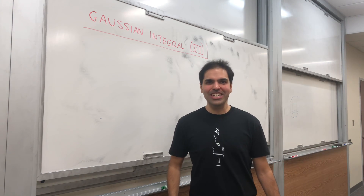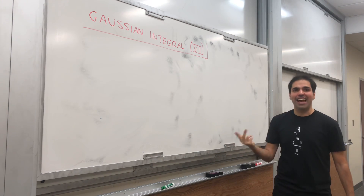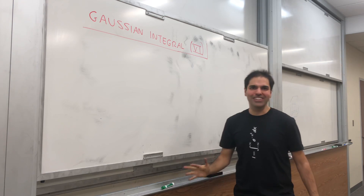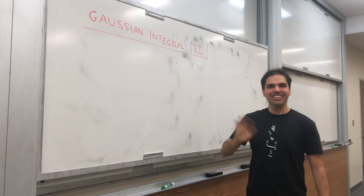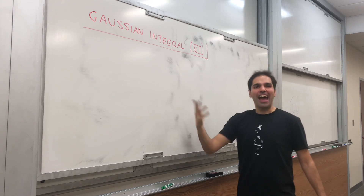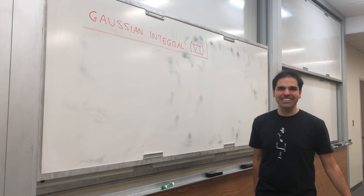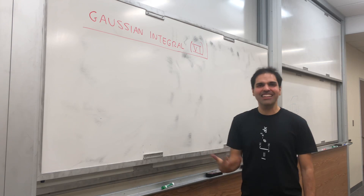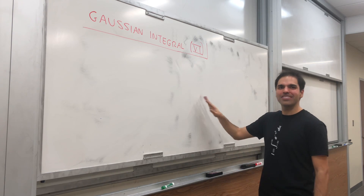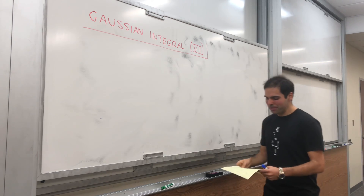Alright, thanks for watching. Today I would like to calculate the Gaussian integral using the gamma function. It's really, really cool — it's the most radical way of doing the Gaussian integral. I would like to thank Keith Conrad for coming up with the notes, because I took it from those notes, and it's really cool.